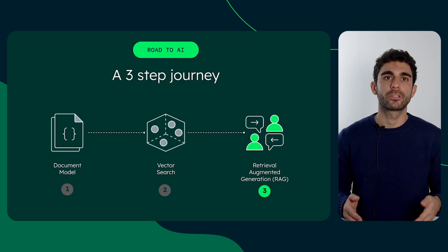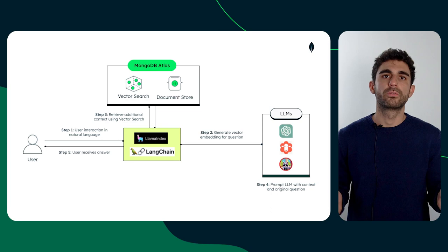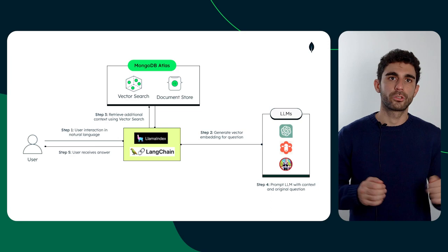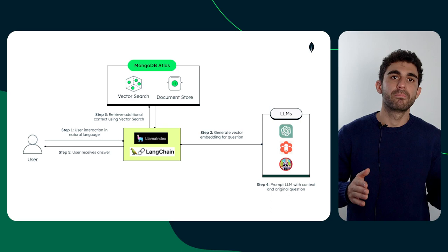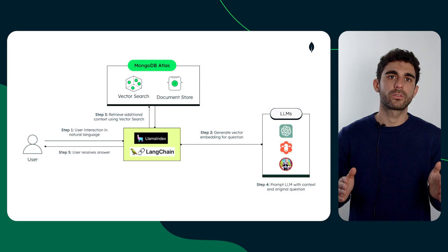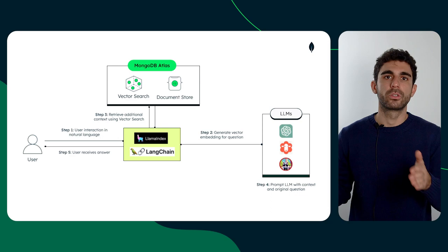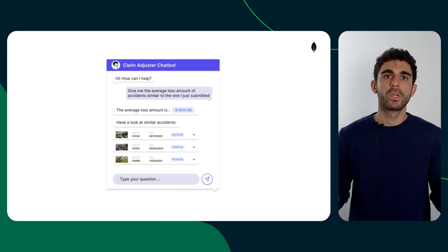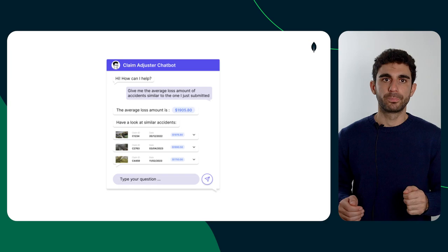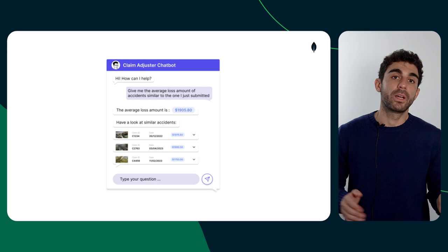Here we can see the different components of the flow and how they relate to each other. The user writes a question in natural language. The question is vectorized and routed to Atlas Vector Search, which returns the most semantically similar documents stored in the database. Those documents are then passed to the LLM as context. The LLM is now able to process the data and get back to the user with an answer in natural language. We depicted this interaction in a wireframe showcasing a user asking questions about accidents through an LLM-powered chatbot. The model is able to answer and make calculations on the contextual data it was provided with.